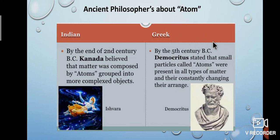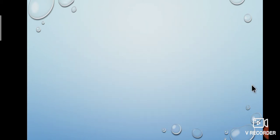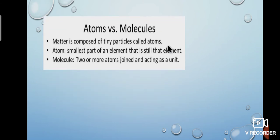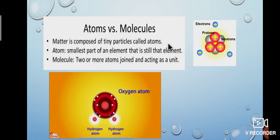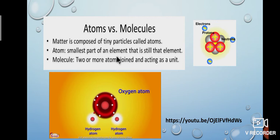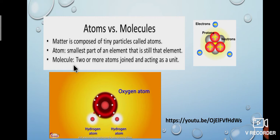Greek philosopher Democritus, in the 5th century BC, stated that small particles called atoms were present in all types of matter and they are constantly changing their arrangement. So both philosophers stated that matter was composed of atoms. Now we will look at the process of atoms and molecules in matter. The smallest part of an element that is still that element is called an atom. Two or more atoms joined and acting as a unit is called a molecule.